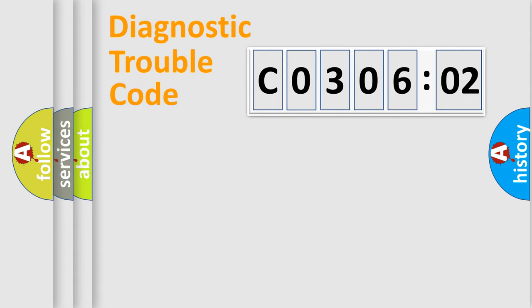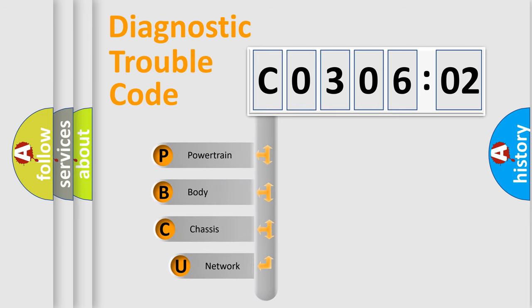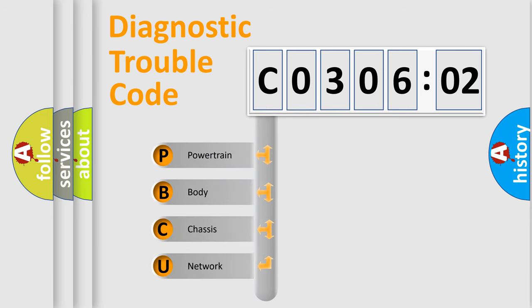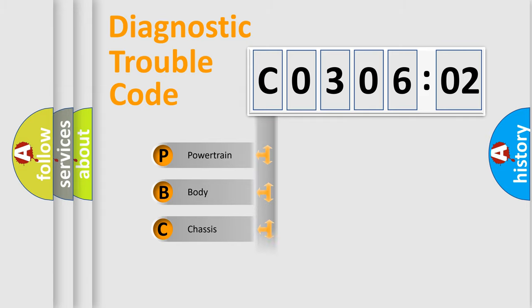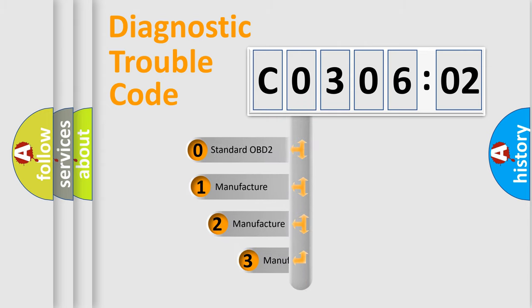First, let's look at the history of diagnostic fault code composition according to the OBD2 protocol, which is unified for all automakers since 2000. We divide the electrical system of the automobile into four basic units: Powertrain, Body, Chassis, and Network. This distribution is defined in the first character of the code.